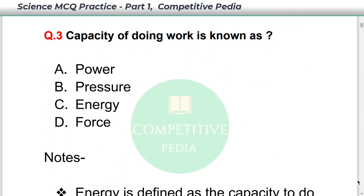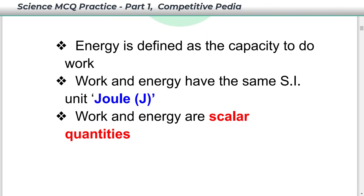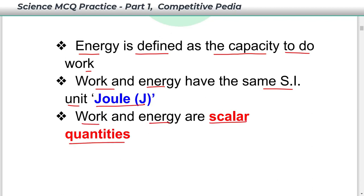Capacity of doing work is known as energy — option C is your answer. Energy is defined as the capacity to do work. Work and energy have the same SI unit, that is Joule, and work and energy are scalar quantities.